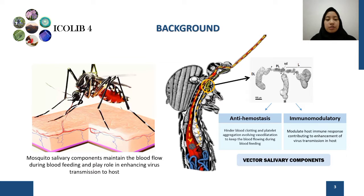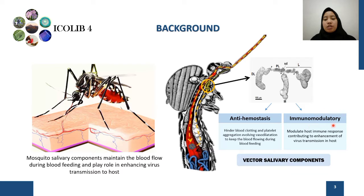Dengue virus transmission happens when the mosquito performs blood feeding. During blood feeding, the mosquito will inject its saliva. Mosquito saliva contains components which are very helpful for the success of blood feeding. These components are the anti-hemostasis component and the immunomodulatory component. The anti-hemostasis component is responsible for maintaining blood flow during blood feeding, whereas the immunomodulatory component is responsible for modulating the host immune response.